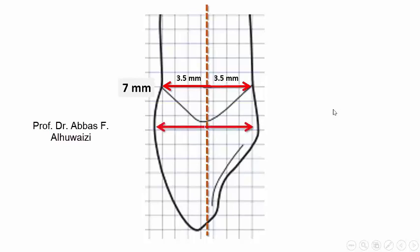The buccopalatal width of the crown at its widest point is 8 mm. Therefore, it is 4 mm from the bisecting line to the peak of curvature buccally and 4 mm from the bisecting line to the peak of curvature palatally.